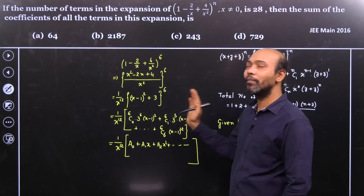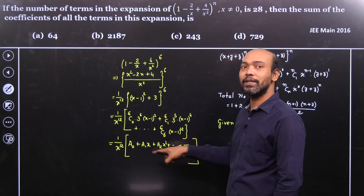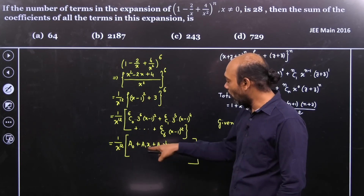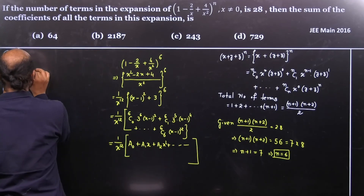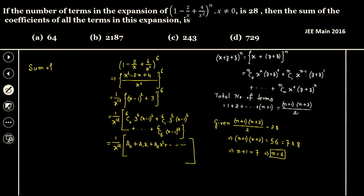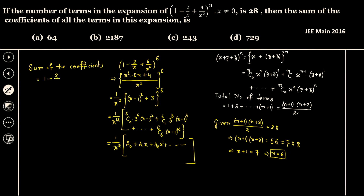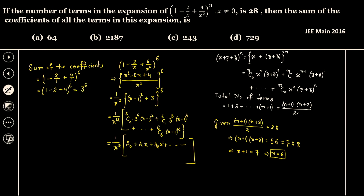To find the sum of the coefficients, we substitute x equal to 1. That gives us all the coefficients a0, a1, a2, and so on added together. For this expansion, substituting x equals 1 into the original expression: 1 minus 2 divided by 1 plus 4 divided by 1, whole to the power 6, gives us 1 minus 2 plus 4, whole to the power 6.